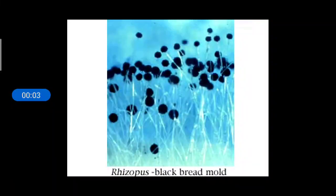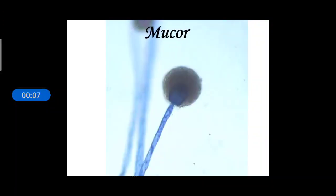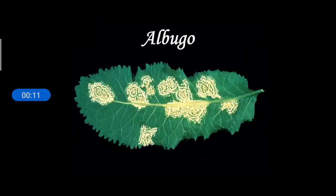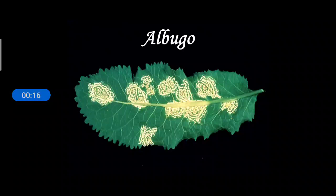Phycomycetes or algal fungus is the first group of fungus under kingdom fungi. It was explained in the previous video and these are the examples. They have aseptate cenocytic hyphae, zygospore as the sexual spore, zoospore and aplanospore as the asexual spore. Now we can go for the further classification of fungus.